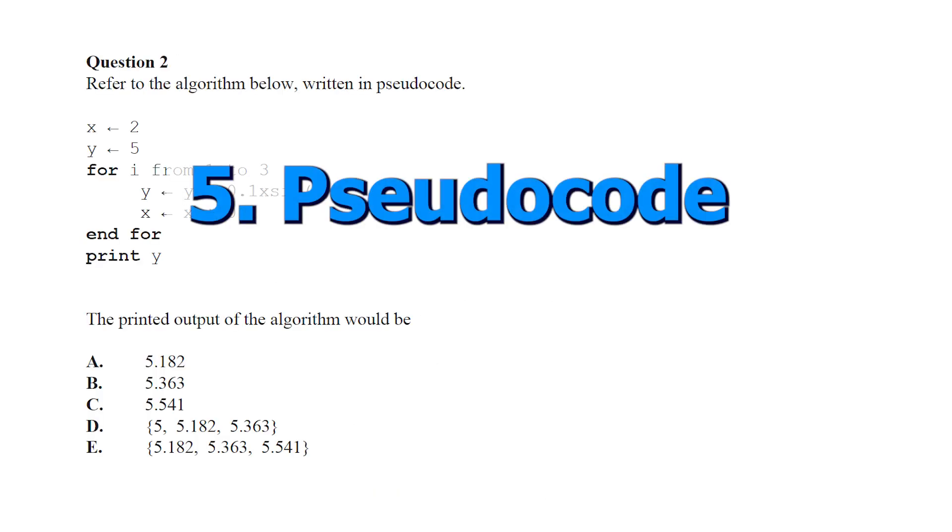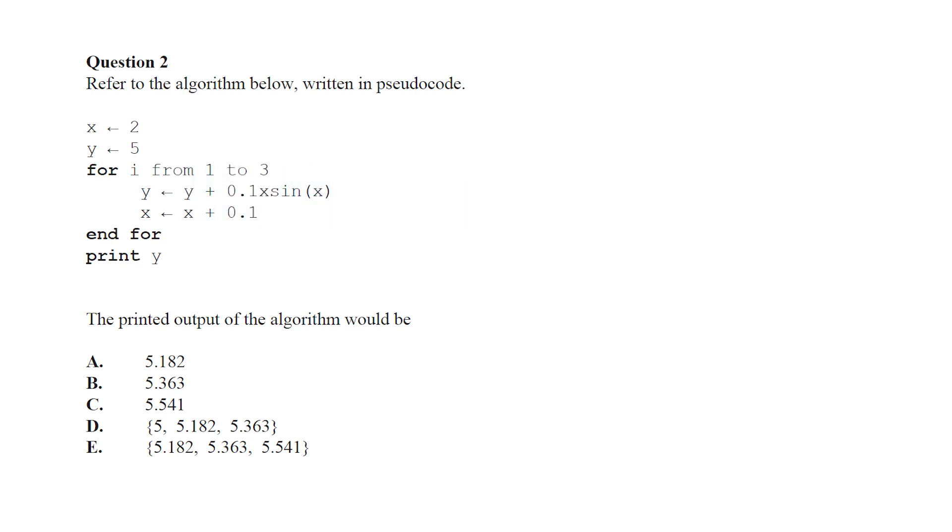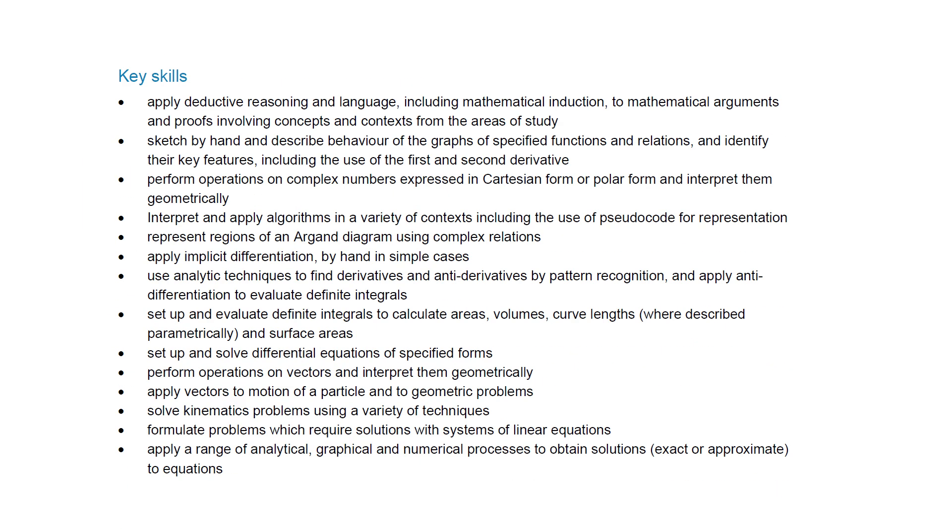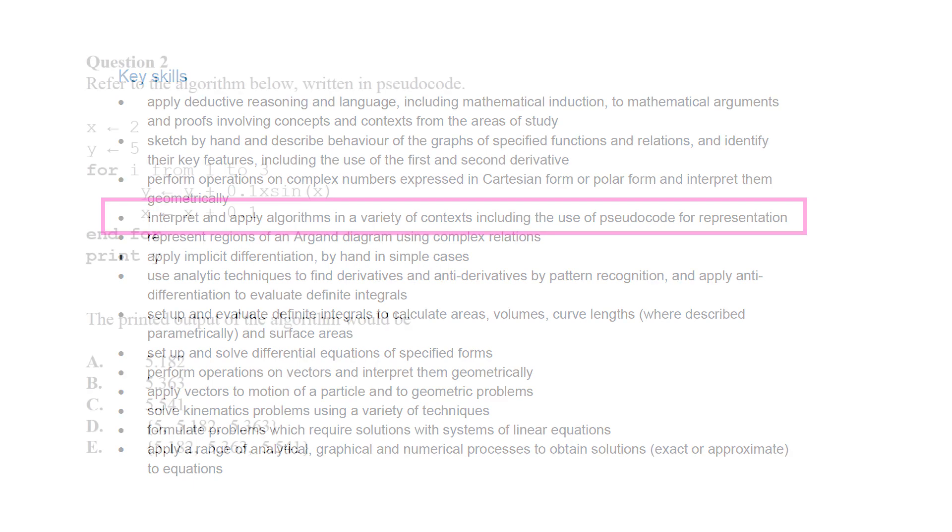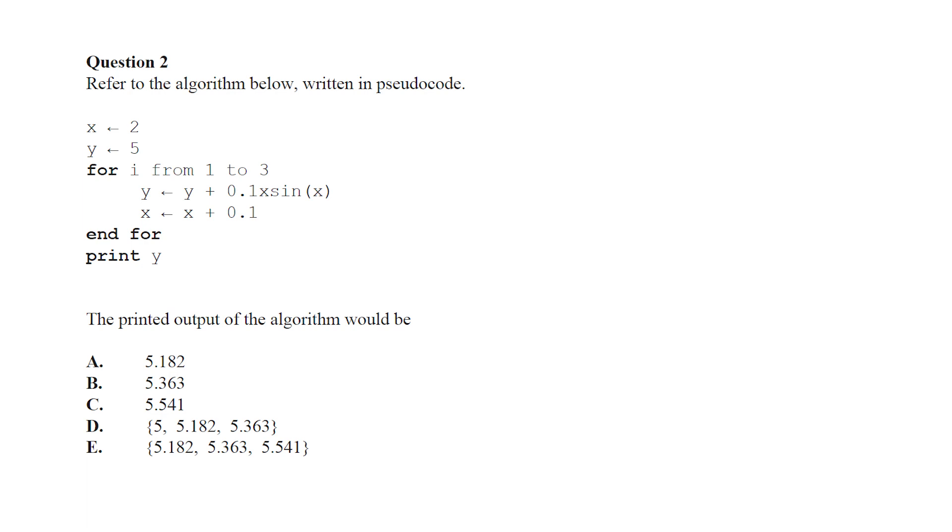Finally, point number five—pseudocode. I put this one last on the list because I think it probably is not going to be more than one or two marks. It's had quite a lot of discussion in like math teacher circles this year, but it is there in the study design. It's not mentioned under any of the areas of the study, but it is there under as a key skill dot point. Let's have a look at an example question. This is one that I gave to my students.